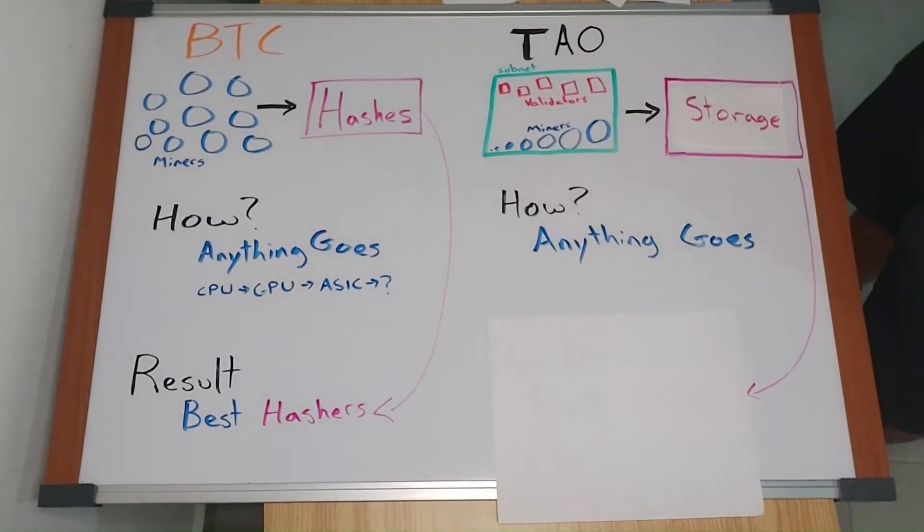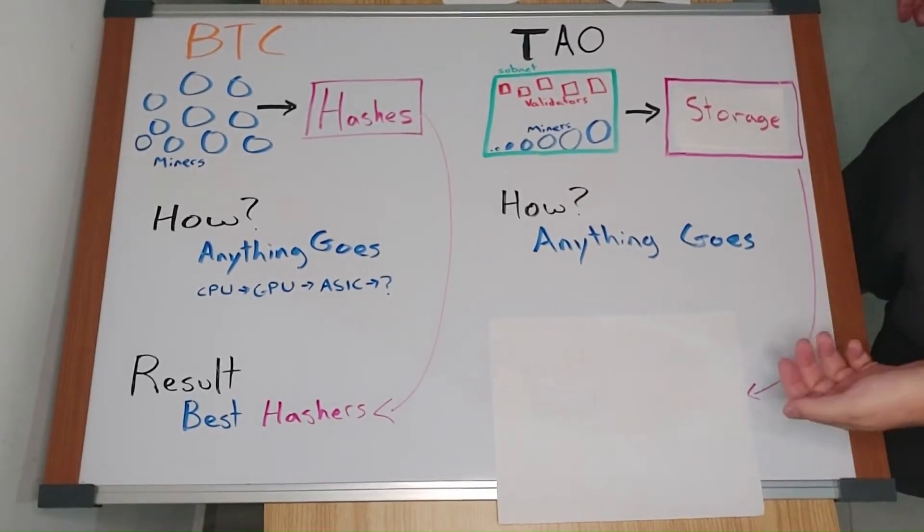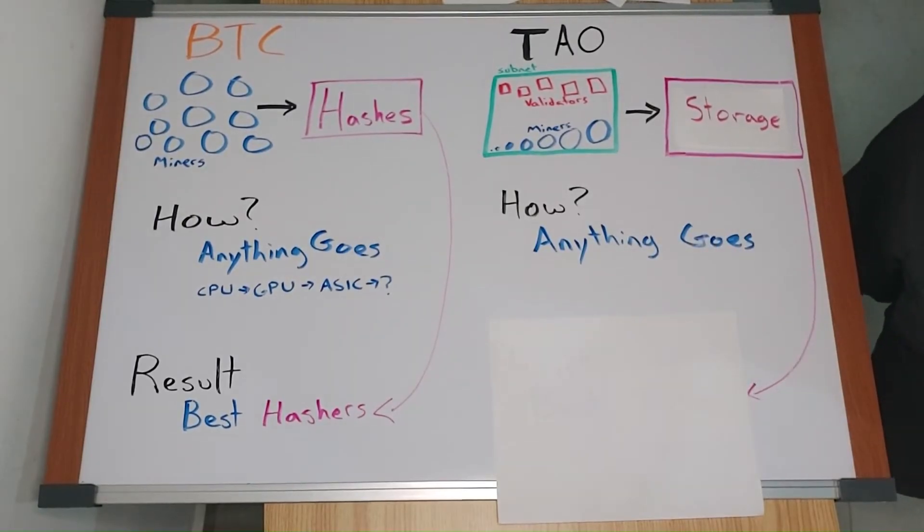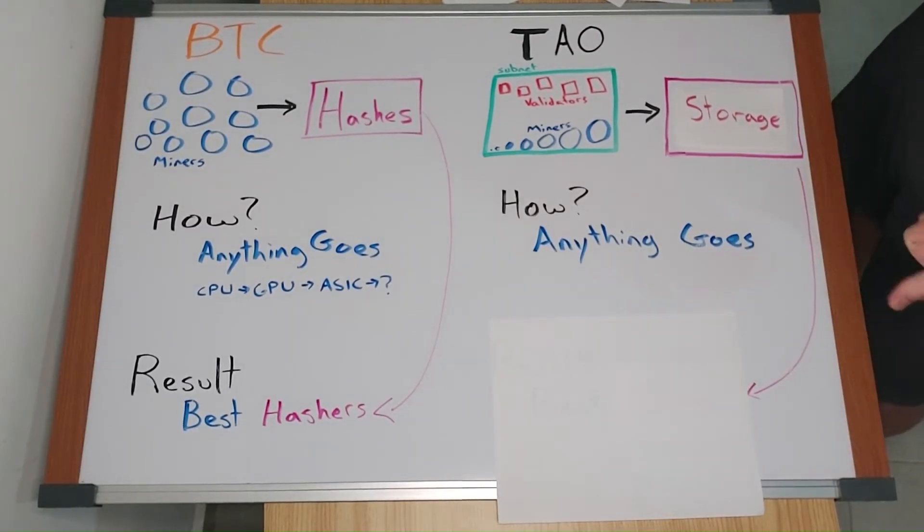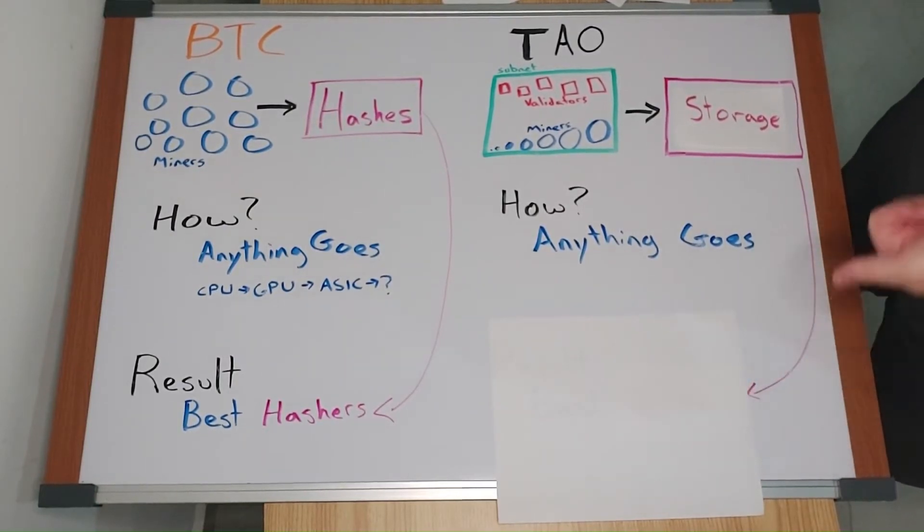Anything goes. Maybe somebody has a few petabytes of storage laying around from a failed business in India. Maybe some miner pays individuals and companies for their unused space by having them run his unique miner code. Maybe a miner builds an AI to monitor the internet for the cheapest cloud storage and take advantage of promos in order to cut costs.